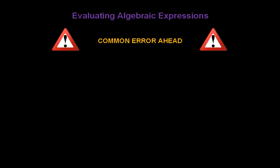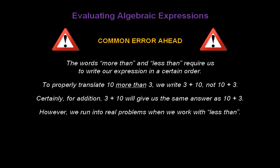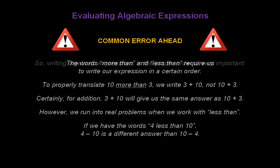Here's a warning. Common error ahead. The words more than and less than require us to write our expression in a certain order. To properly translate 10 more than 3, we write 3 plus 10, not 10 plus 3. For addition, 3 plus 10 gives the same answer as 10 plus 3. However, we run into real problems with less than. 4 less than 10: 4 minus 10 is very different than 10 minus 4.